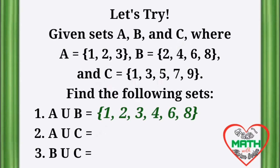A union B is equal to {1, 2, 3, 4, 6, 8}. Since the elements in set A are 1, 2, and 3, and in set B are 2, 4, 6, and 8, if we get A union B, we join the elements in both sets. Note that the elements should only be written once.